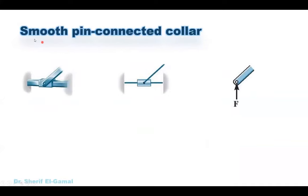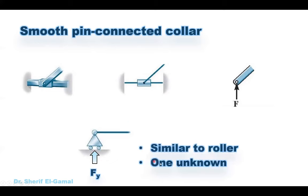Similar to the roller support we have something called smooth pin connected rollers. Because it is a smooth roller it can move in the horizontal direction, therefore there is no reaction in the horizontal direction. It can rotate about the pin, so no moment. Therefore again you will have only one reaction — one unknown — which will be vertical in this case and it is perpendicular to the base element. So again it will be similar to the roller support: only one unknown, FY.